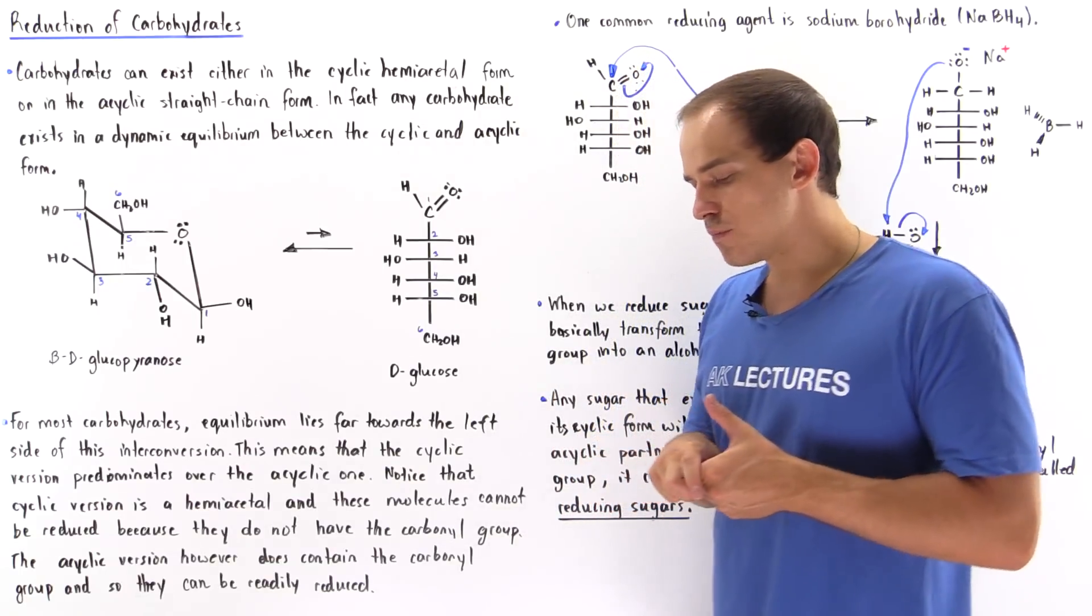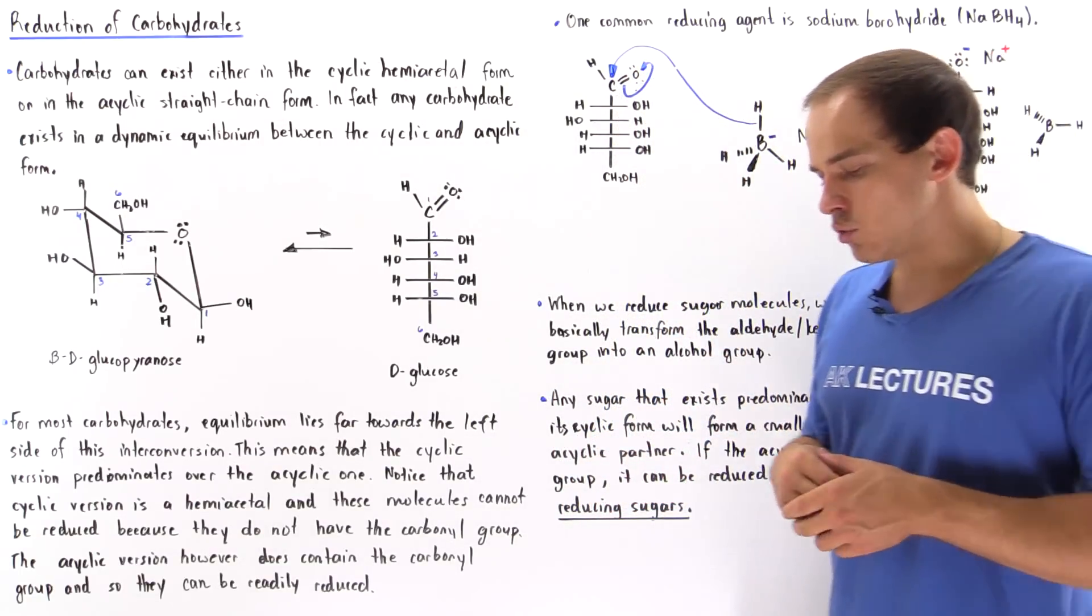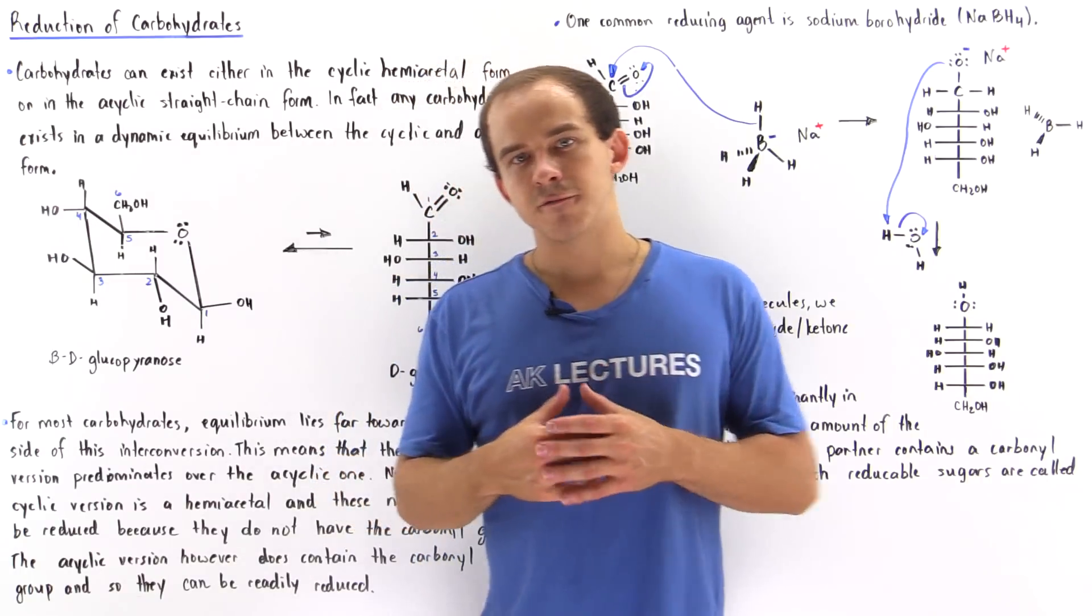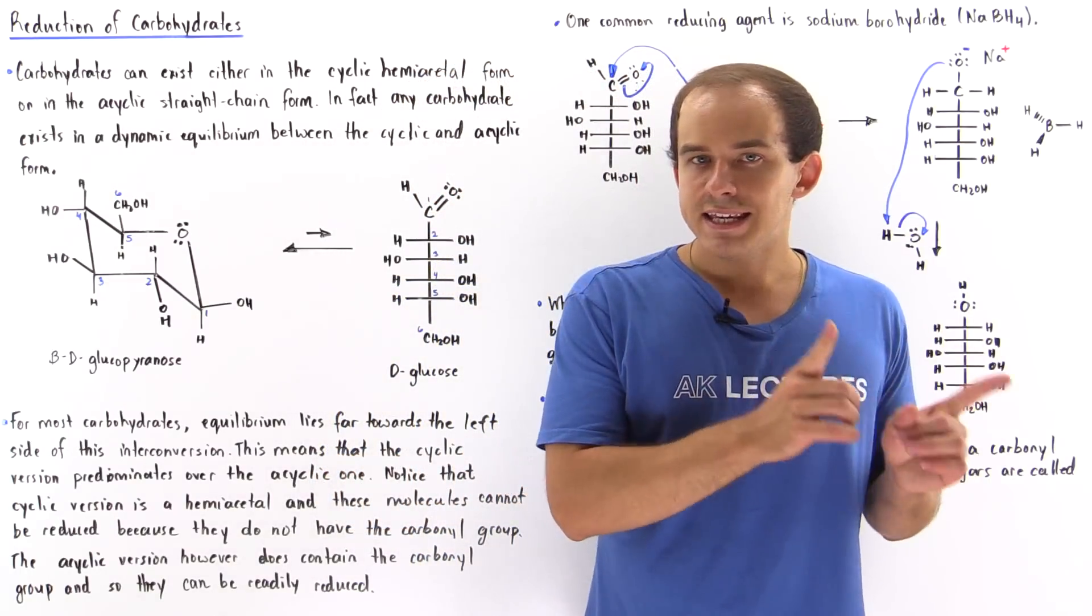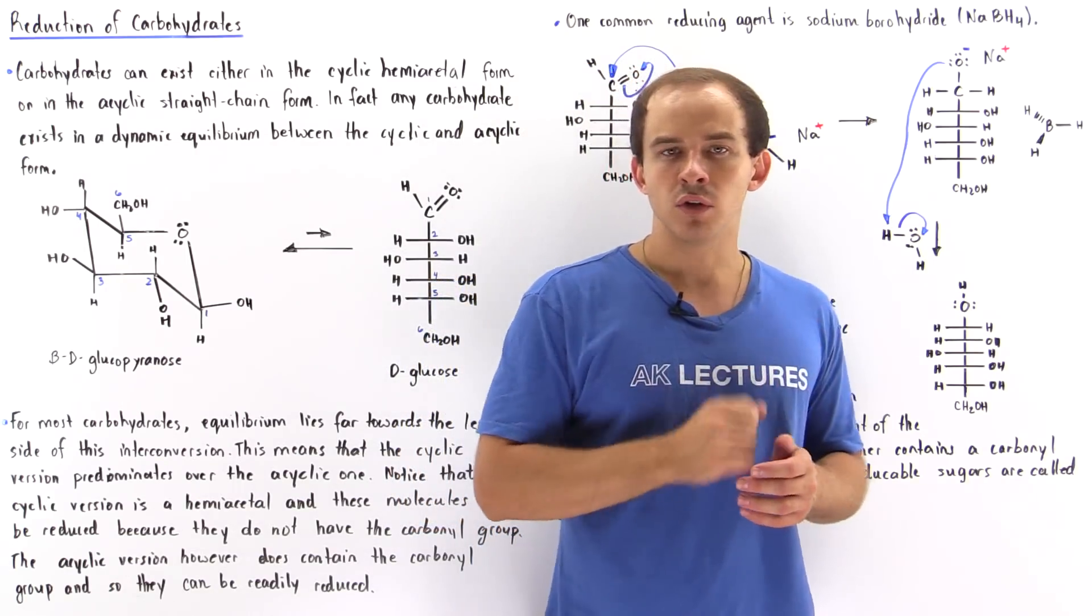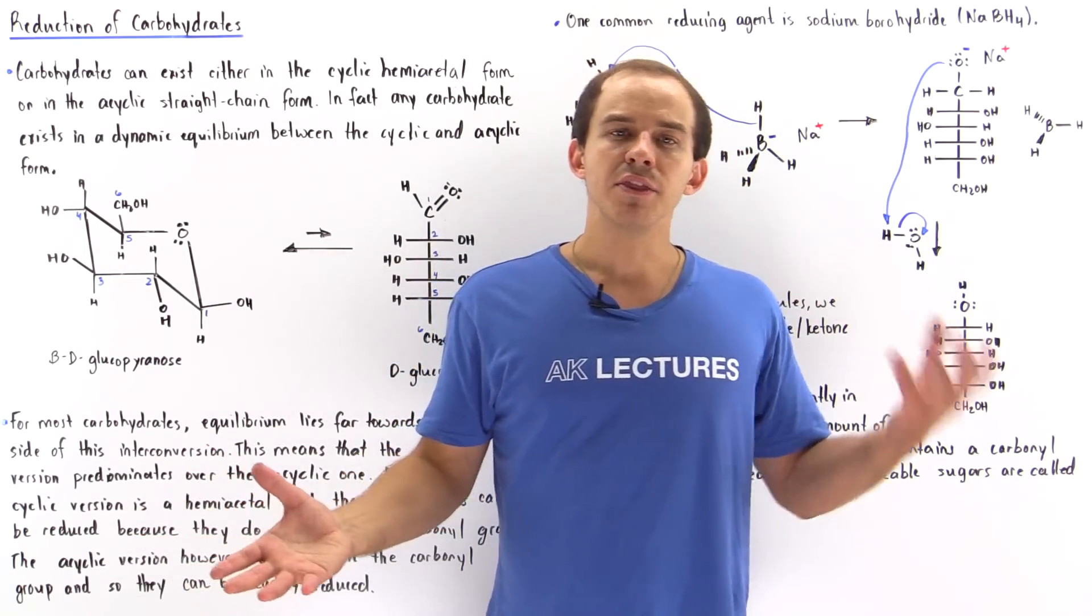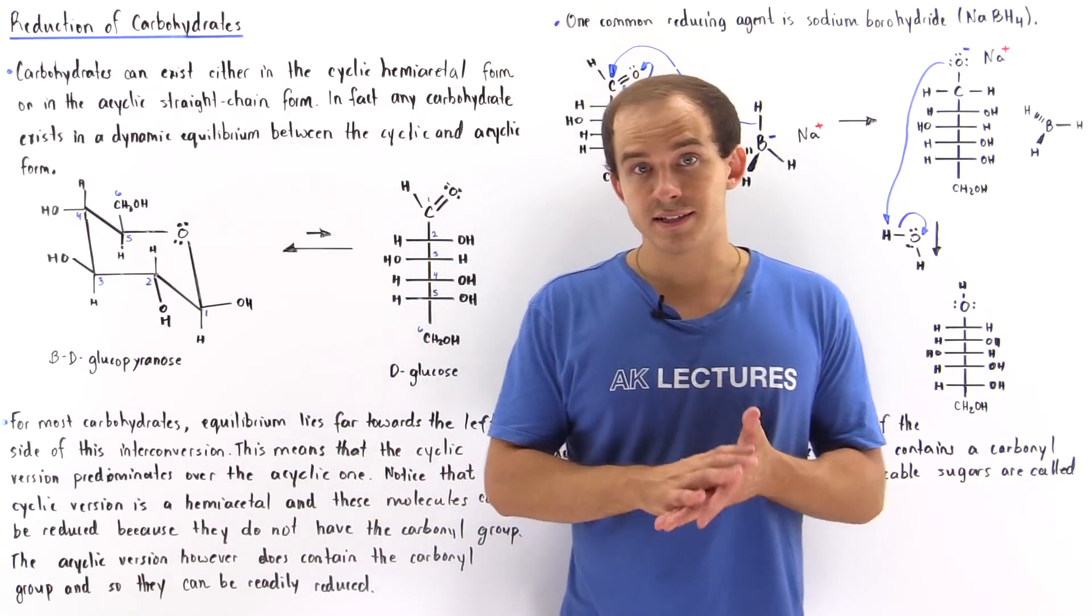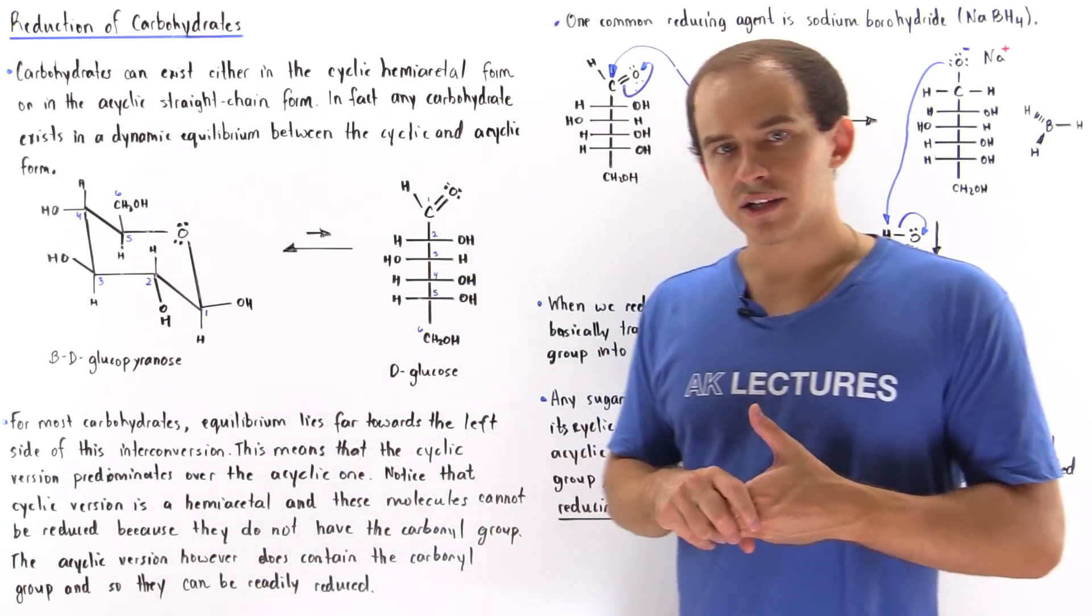When we have a sugar molecule, the sugar molecule can exist in two forms: the cyclic and the acyclic form. In fact, any given carbohydrate molecule exists in a dynamic equilibrium between the cyclic and acyclic form. To see what we mean, let's take as an example the glucose molecule.